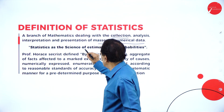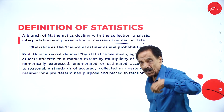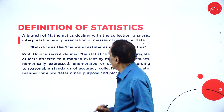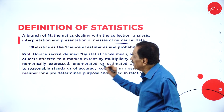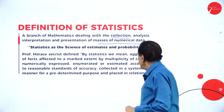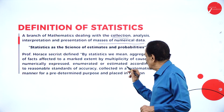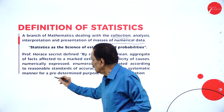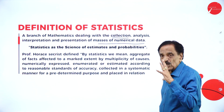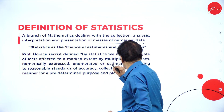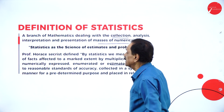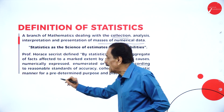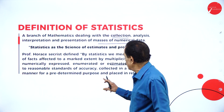Some authors say statistics is the science of estimates and probability. Professor Secrist defined statistics as: 'We mean aggregates of facts affected to a marked extent by a multiplicity of causes, numerically expressed, enumerated or estimated according to reasonable standards of accuracy, collected in a systematic manner for a predetermined purpose, and placed in relation to each other.' So accuracy must be calculated when collecting data systematically.